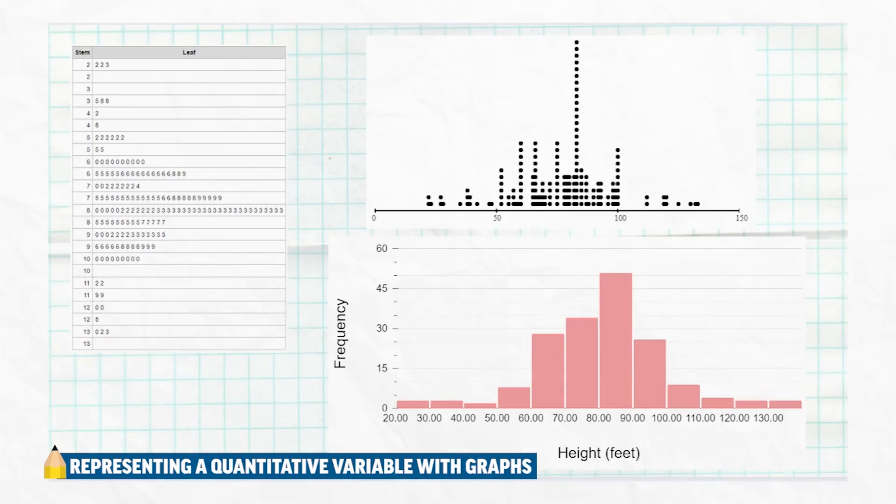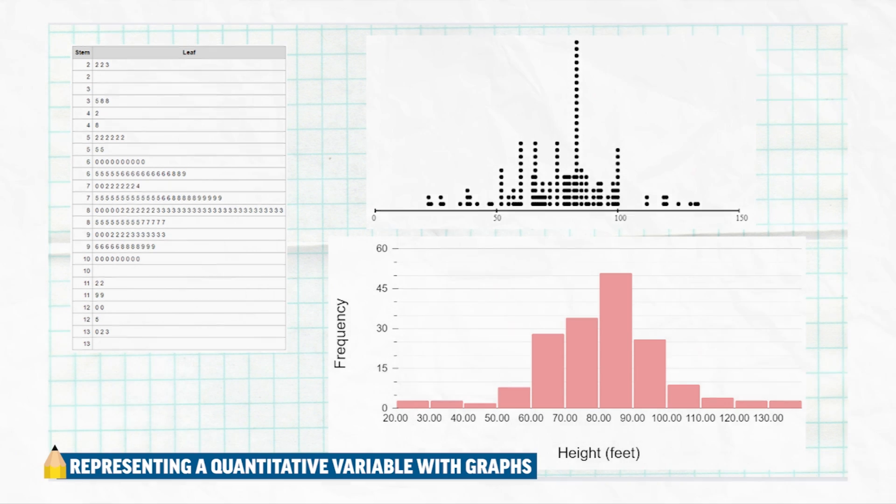The really cool thing about it, whether it's a stem and leaf plot or a dot plot or a histogram, is that you can see the distribution. Remember, the distribution is what values your variable can take on and how often it takes them on. So by looking at these distributions, we can clearly see where there's less data and where there's more data, what heights are most common versus what heights are least common.